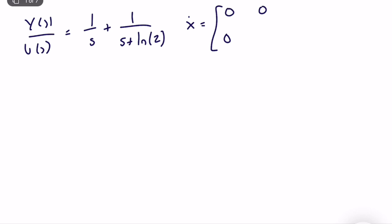First pole is equal to zero, second pole is equal to minus ln(2). x plus, since its diagonal canonical form it will be just one set to be matrix, it's u. So output is very simple.